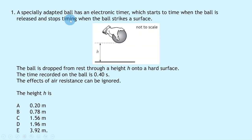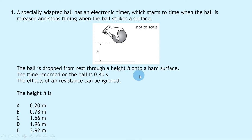Question 1 says a specially adapted ball has an electronic timer which starts to time when the ball is released and stops timing when the ball strikes a surface. The ball is dropped from rest through a height H onto a hard surface, as shown in the picture. The time recorded on the ball is 0.40 seconds. The effects of air resistance can be ignored. The height H is?